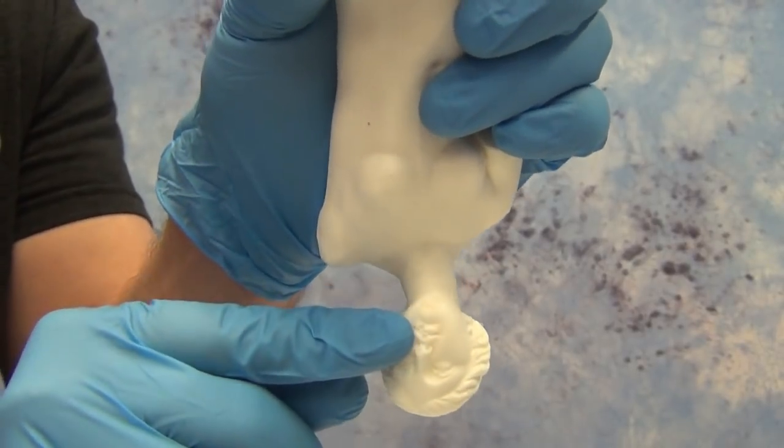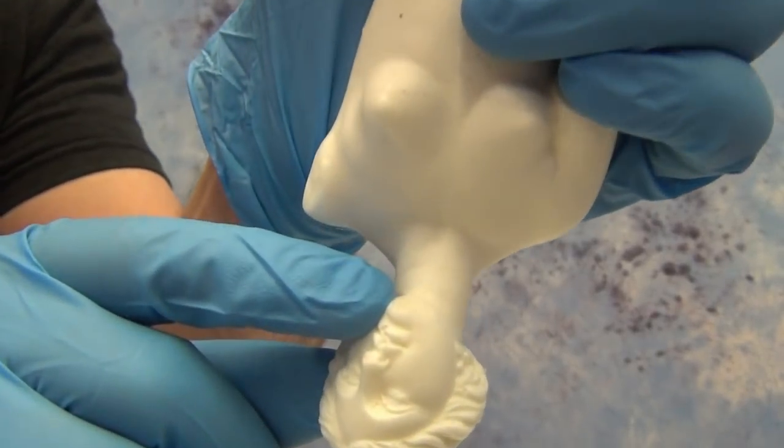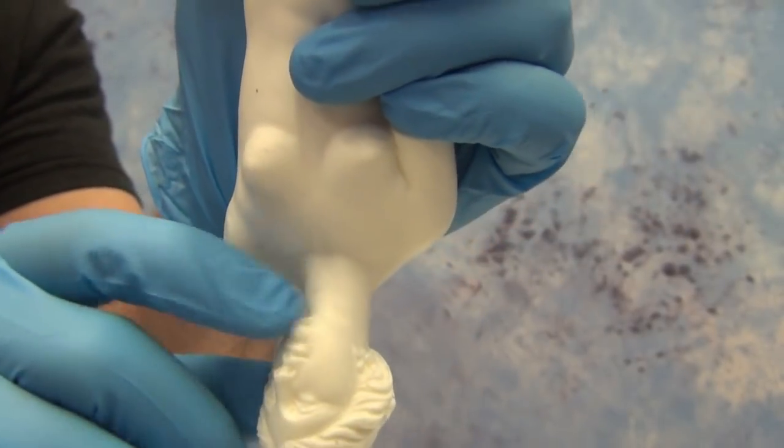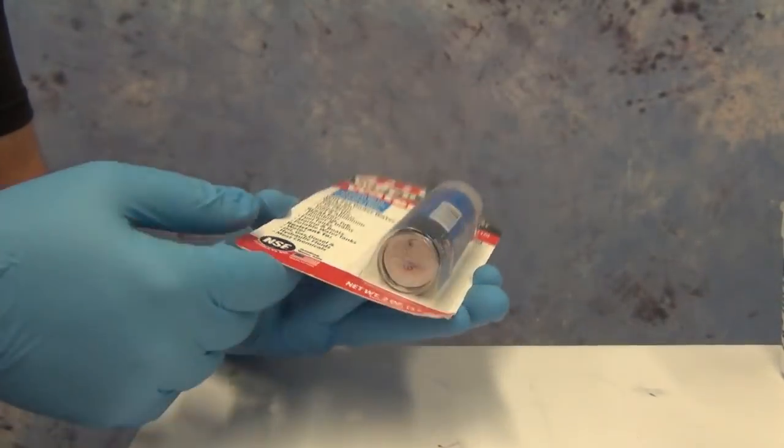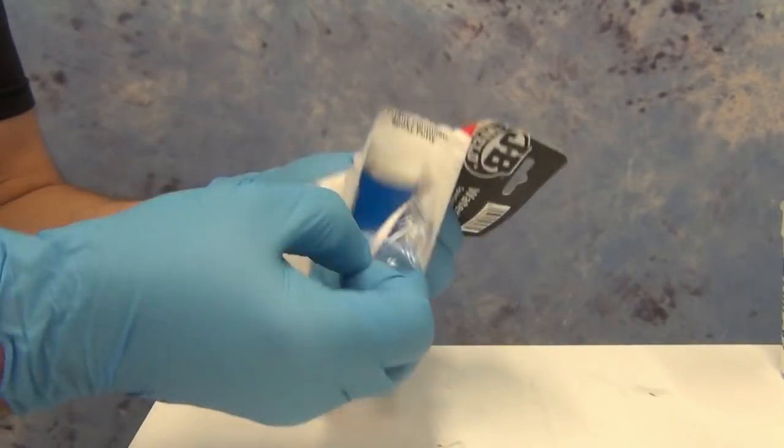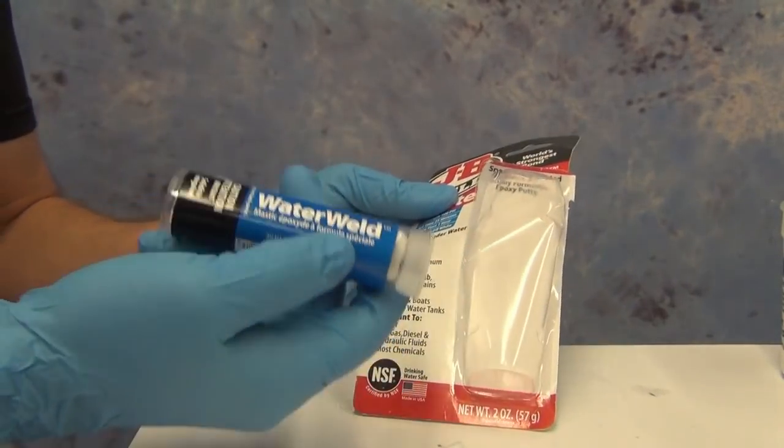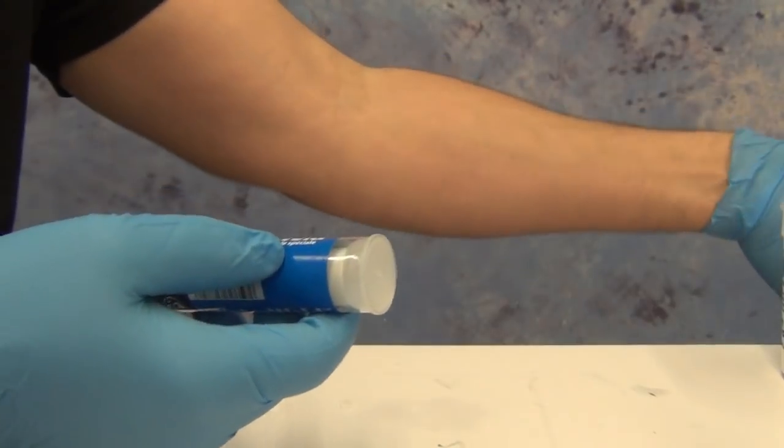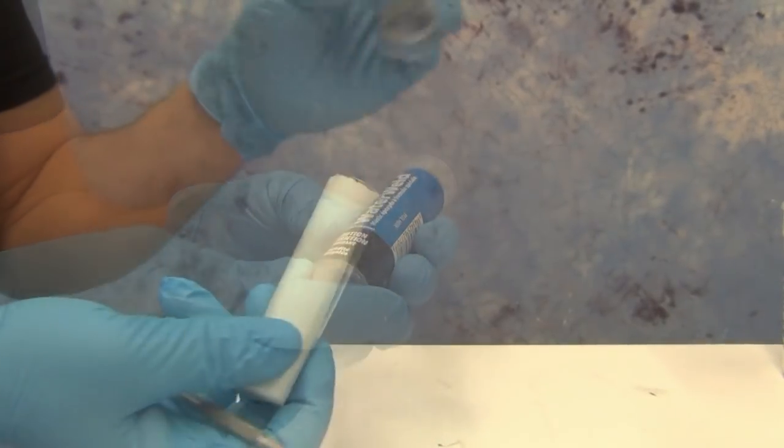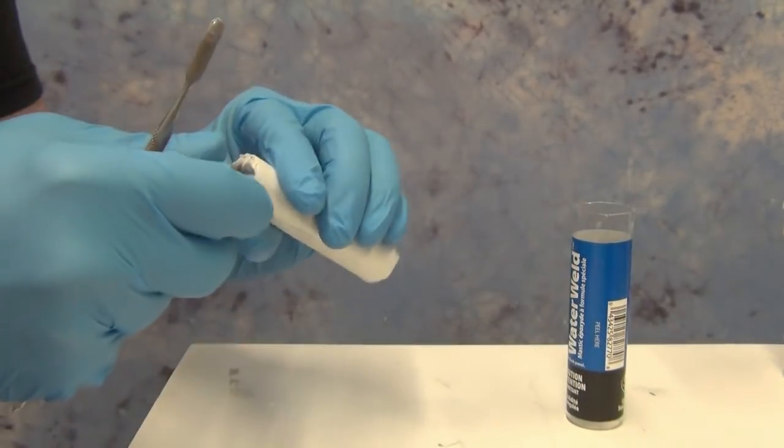Here we're using the water weld putty to fill a bigger void. This is better for larger air bubbles and areas where you might have to reconstruct a small area of the sculpture. The nice thing about this water weld putty is you can find it at most hardware stores in the adhesive section. This is typically intended for porcelain sink repair and it's a nice strong fast setting epoxy putty.